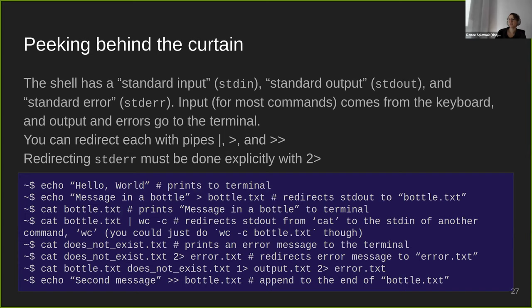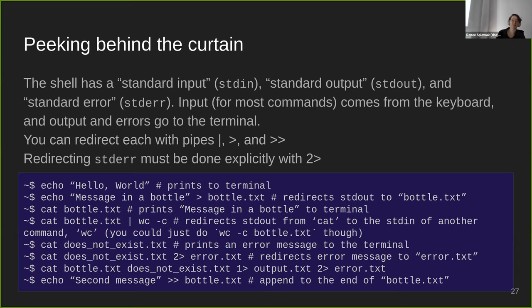Looking a bit more at what is going on with the shell, especially when you want to run more complicated commands: you have a standard input, standard output, and standard error. The input in most cases is going to be the keyboard. The output and errors are going to be printed to the terminal window. You can redirect all of these with pipes — the vertical bar — and greater-than signs. If you type 'echo hello world' with or without quotation marks, it should just print hello world right beneath that line.